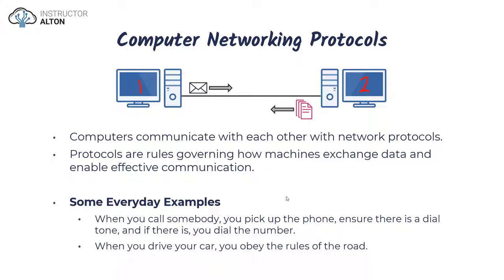Another example is driving your car. You have to obey the rules of the road. If you don't, you could get a ticket, lose your license, or cause an accident. If you do follow them, you'll be safer and keep your license. Obeying the rules of the road means following specific protocols — a protocol really is nothing more than a rule.